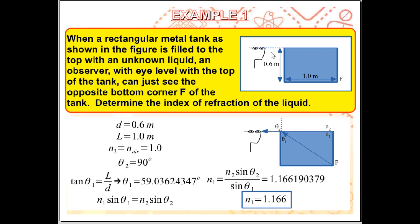Let d be the depth of the tank, 0.6 meters, and l be the length of the tank, 1 meter. Medium 1 and medium 2 are separated by an interface, and the normal line is perpendicular to that interface. From this we get our angle of incidence theta 1 and angle of refraction theta 2. From the figure we can see that the angle of refraction theta 2 is 90 degrees.